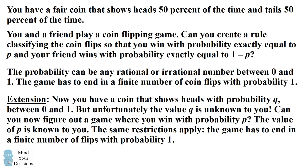You can also try this extension to the problem. Now you have a coin that shows heads with probability Q between 0 and 1, but the value Q is unknown to you. In other words, you have a biased coin, but you don't know the bias. Can you figure out a game where you win with probability P? The value of P is known to you. The game has to end in a finite number of coin flips with probability 1. Give them a try and when you're ready, keep watching the video for the solution.